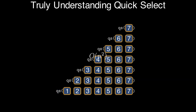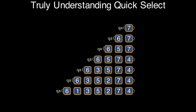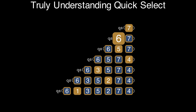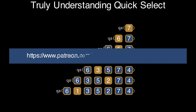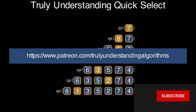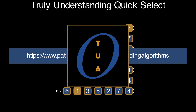The worst case behavior with running time O(n²) is still possible — for any input, in the case where we get really unlucky and the random choice always returns the smallest element, for example. However, this series of unlucky choices is exceedingly unlikely, both in theory, where it does not affect the average case at all, and in practice, where you can count on the randomized QuickSelect algorithm to be blazingly fast for all but the most critical applications. You can support these video tutorials financially on Patreon. Make sure you subscribe to the Truly Understanding Algorithms YouTube channel, hit the bell icon, consider liking the video, and leave a comment with topics you'd like covered in the future.